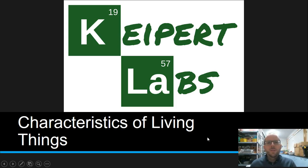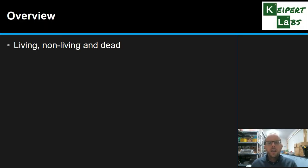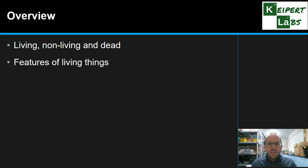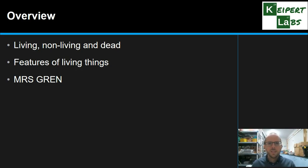Hi everyone and welcome to this episode of Kaipit Labs. In today's video we're going to be outlining the characteristics of living things. We're going to start off by recapping what we mean by living, non-living and dead, to help us hone in on what we mean by living things. We're going to discuss the seven key characteristics that living things share, which we are going to use the acronym Mrs. Green for, and we're going to go through each one line by line.